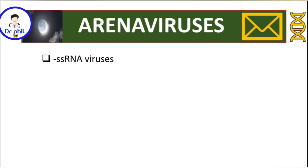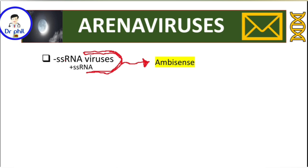This moon is representing negative-sense single-stranded RNA viruses. But the arena viruses have the ability to incorporate the positive-sense strands as well, so they are referred to as ambisense.